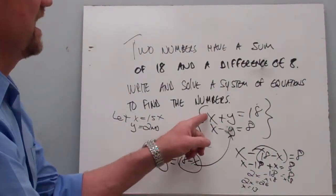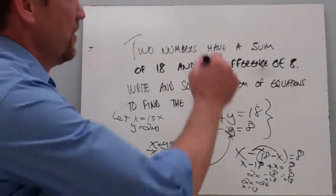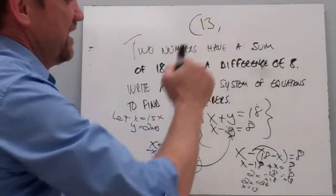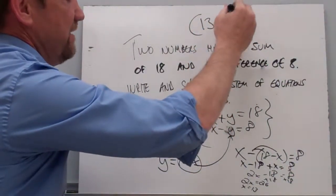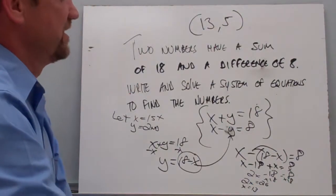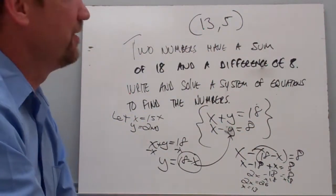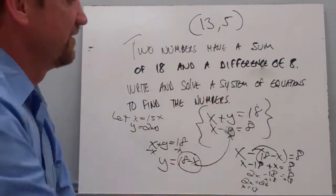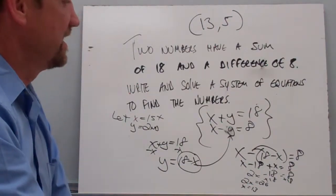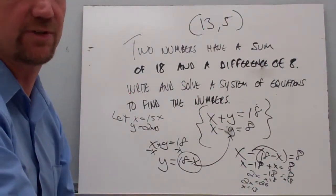Since x plus y equals 18, when x is 13, I know that y is going to be 5. Notice that these two numbers do have a sum of 18 and a difference of 8. That's how you would set up and solve that system of equations.